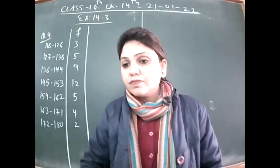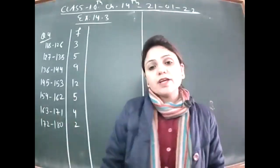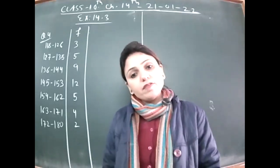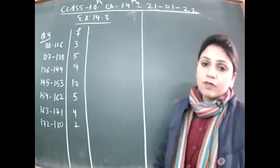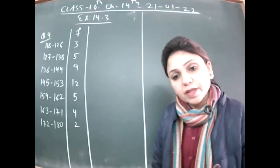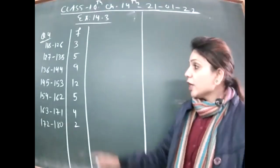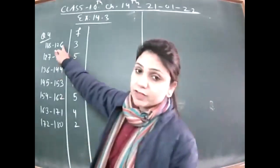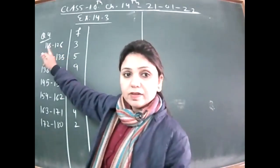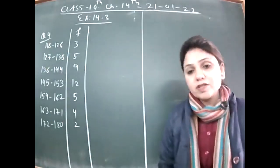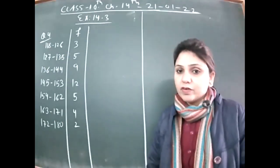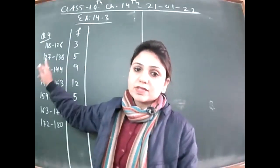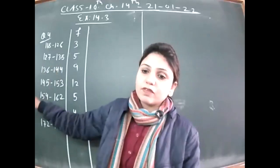We want to find the median of this data. There are two kinds of intervals: inclusive form and exclusive form. These intervals are in inclusive form — one interval ends and the next starts without overlap. For example, one interval ends at 126 and the next starts at 127, not 126.